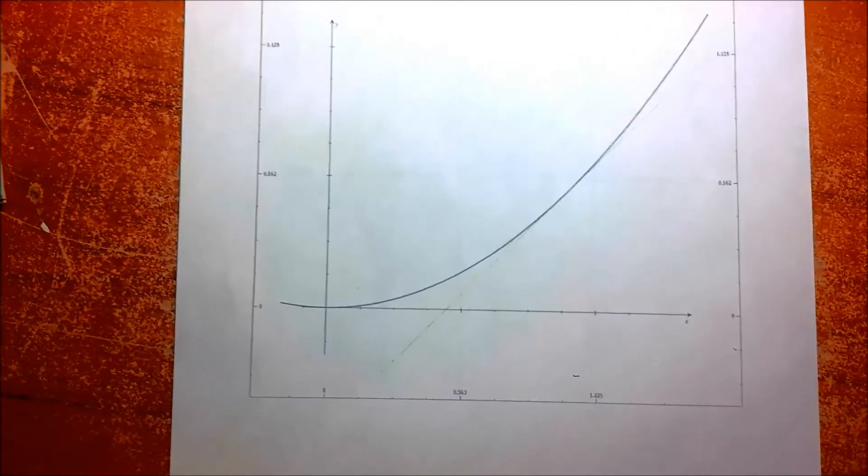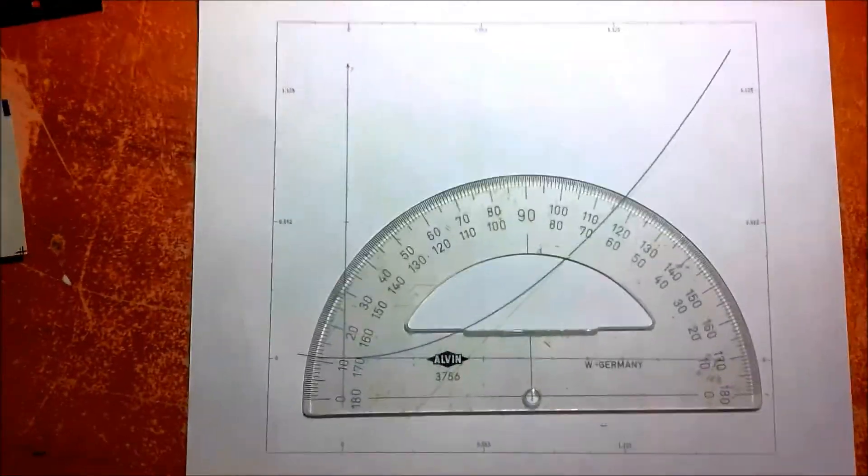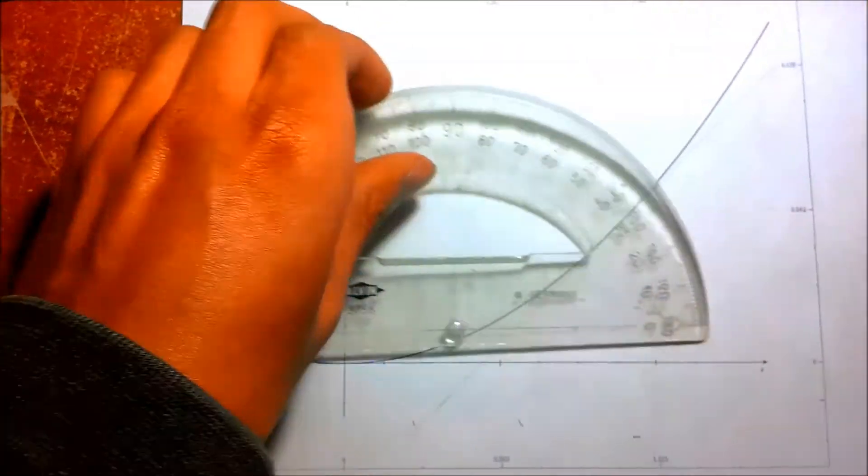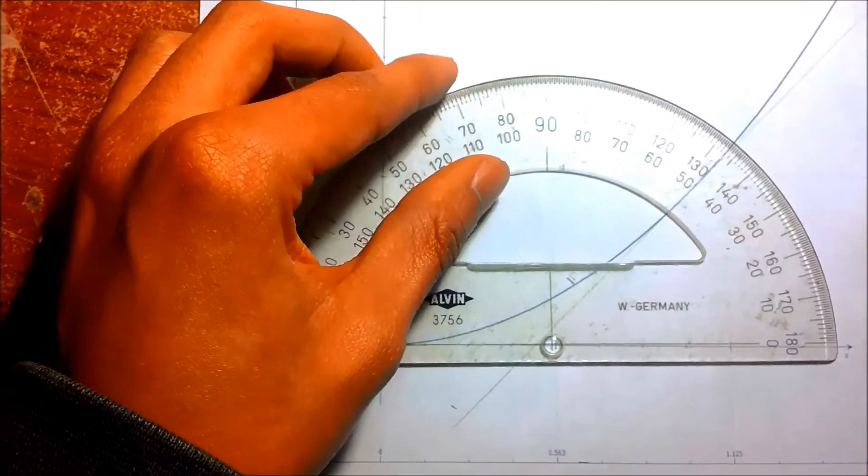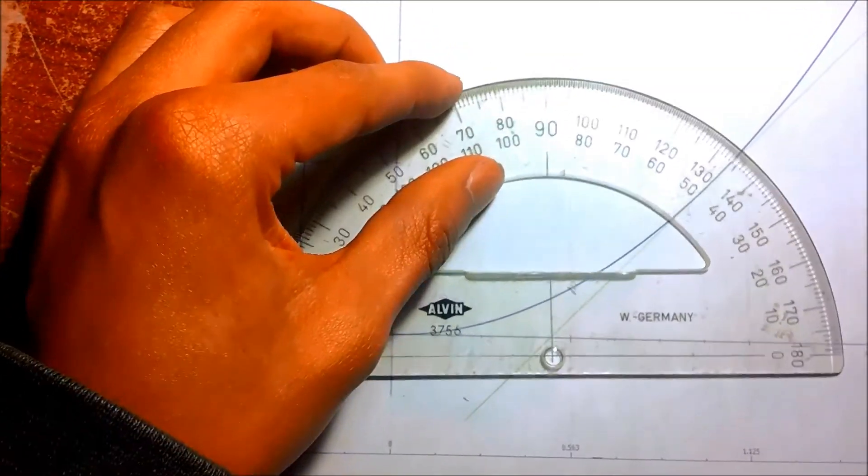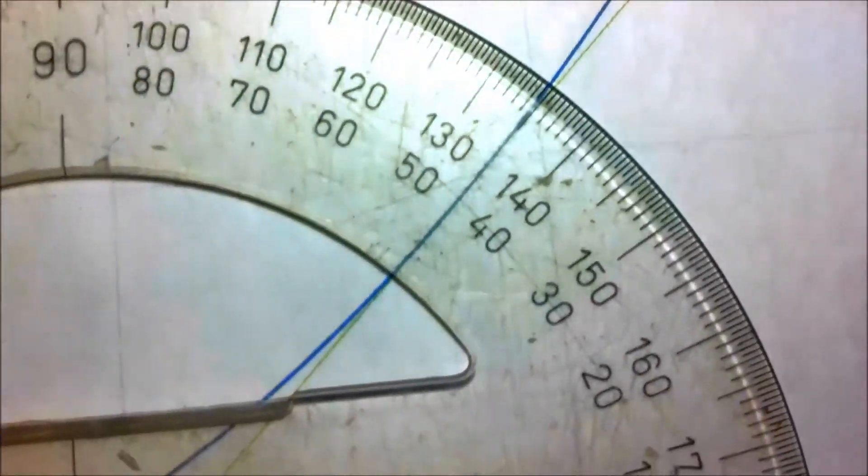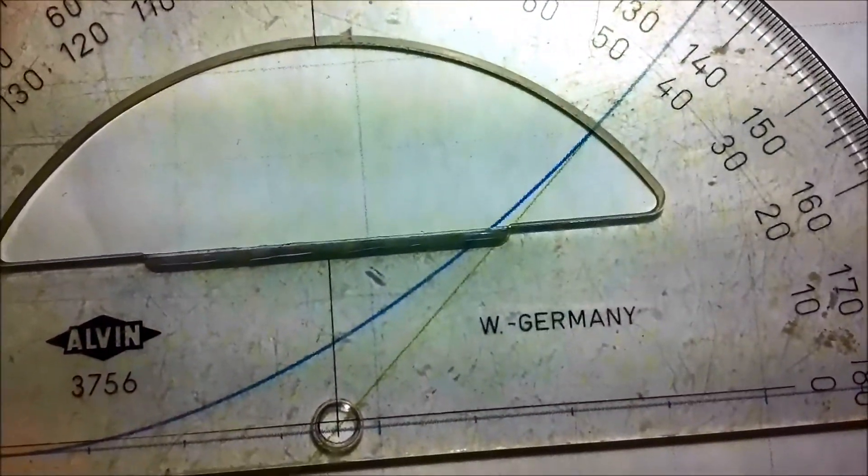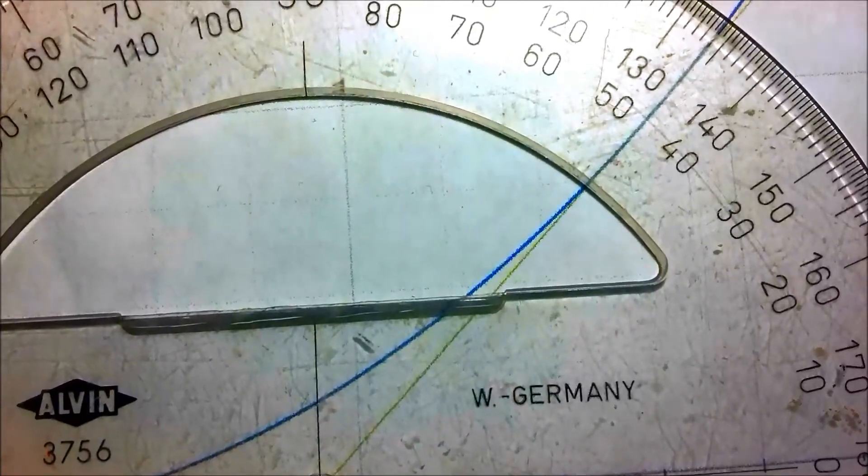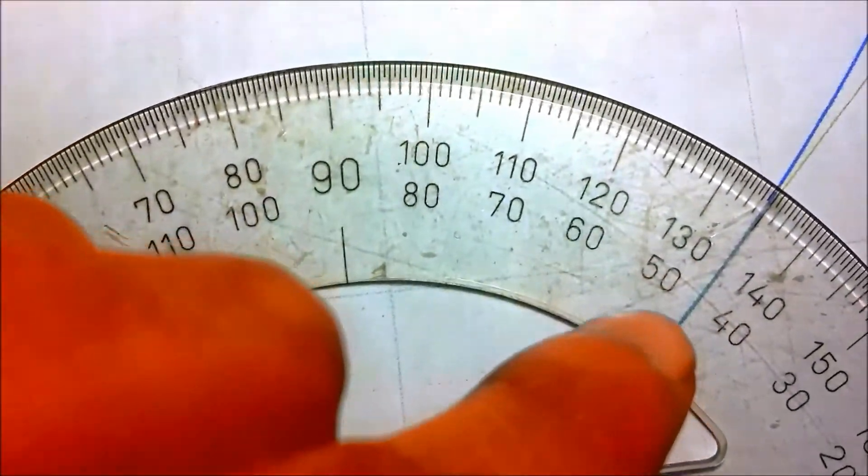We don't know the slope of the tangent but we can find out by using the protractor here. So if we look at the protractor and we set the center. Looking at this bottom number here, you can see that it is 45.